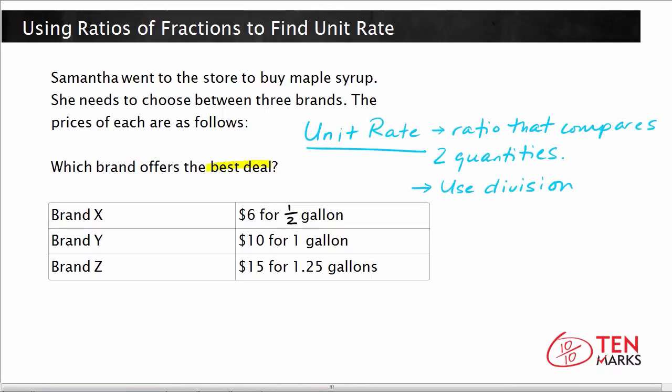In the case of this problem, there are two different quantities that we're dealing with. One is the cost and the other is the number of gallons. The second quantity of a unit rate is always one unit. So we want to find the cost for one gallon. Now what we're going to do is use division to find the unit rate.